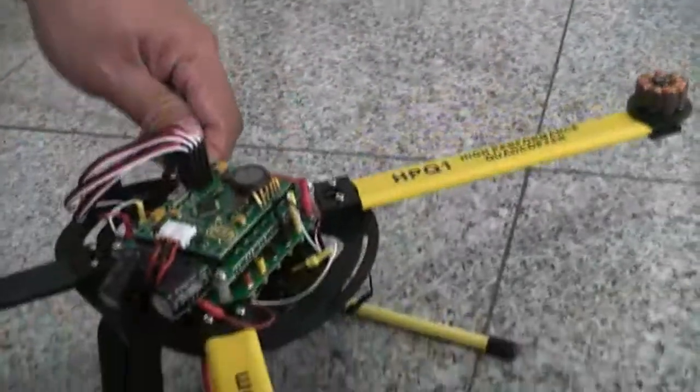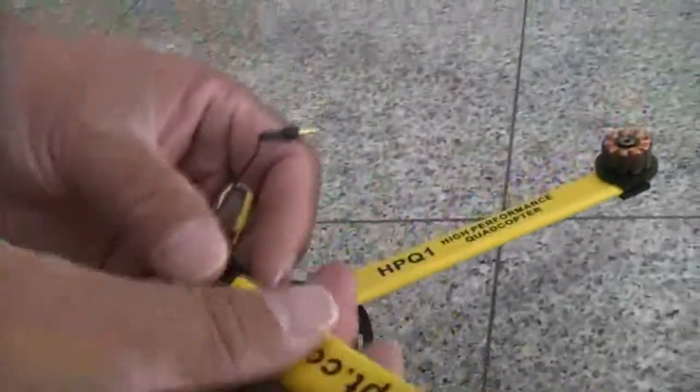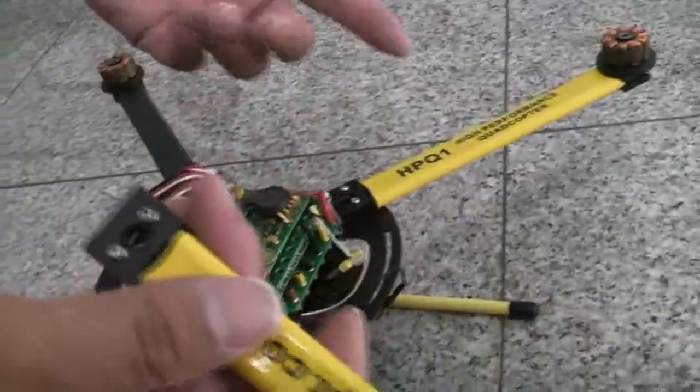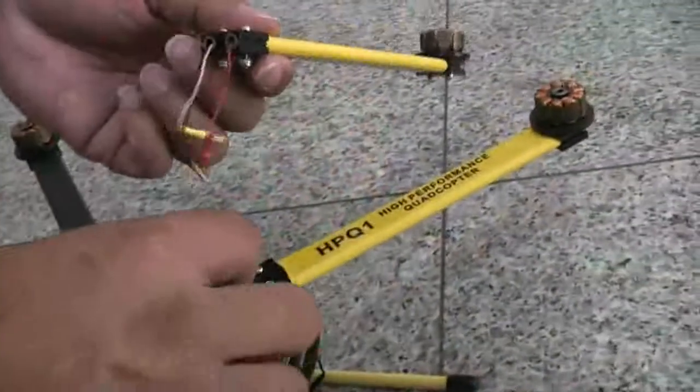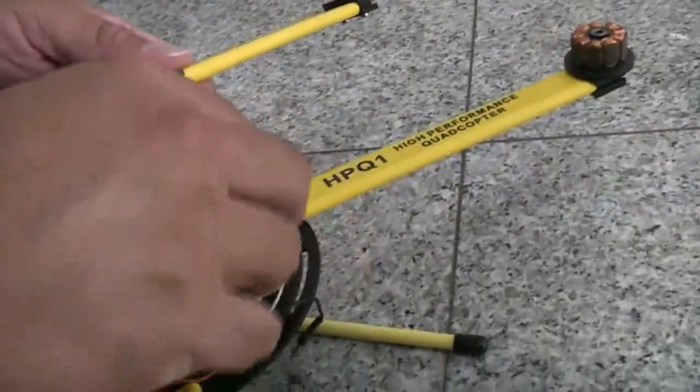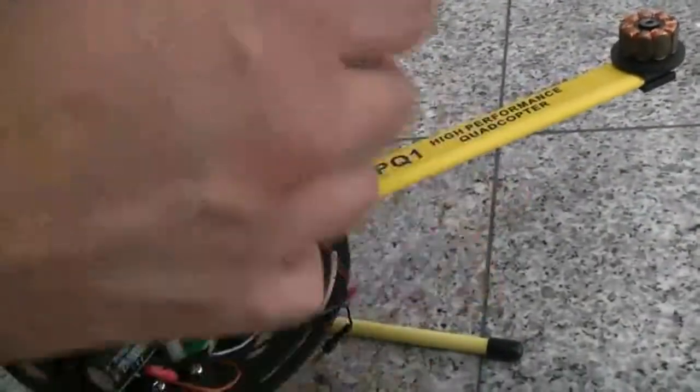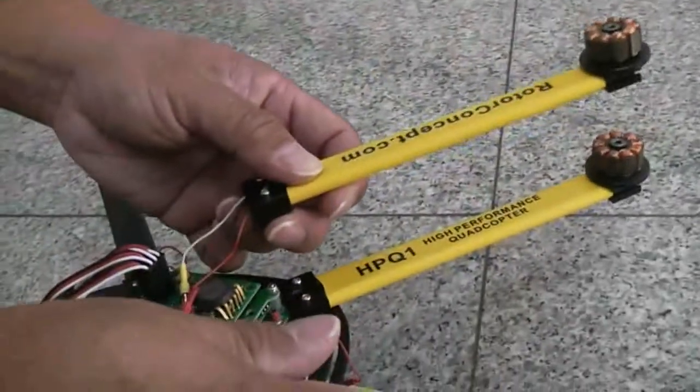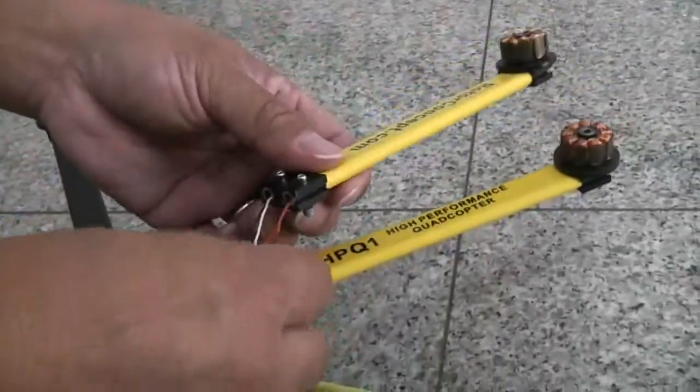Once you remove it, all you need to do is unplug one of the other three, whichever you want, to do the test. We want to test and make sure it's a motor problem or a speed control problem.